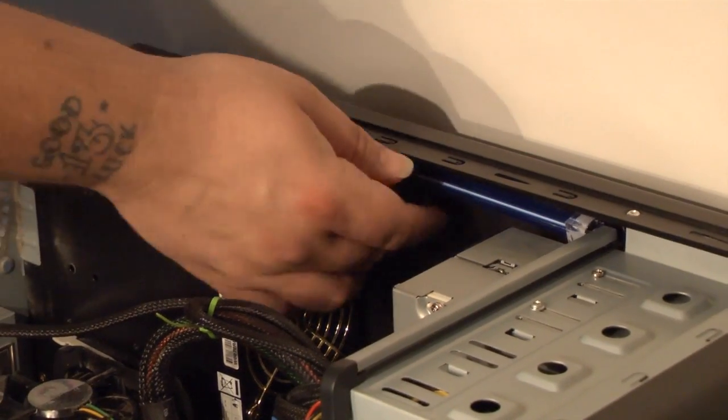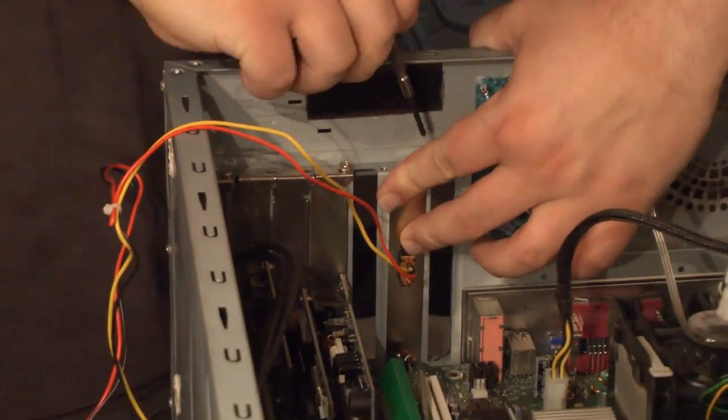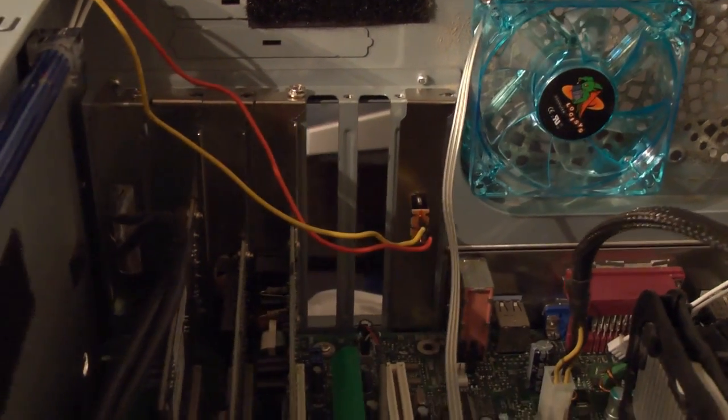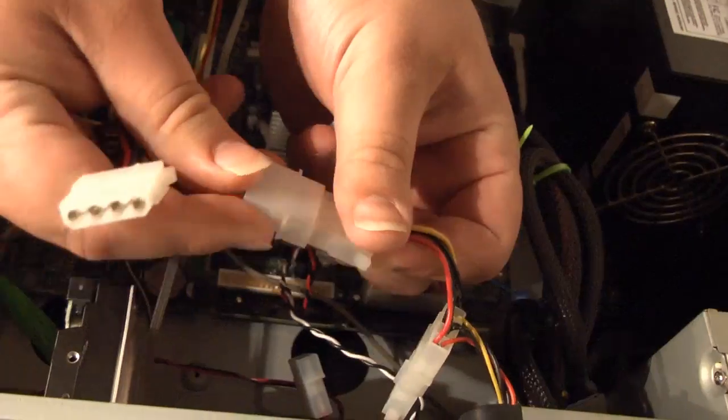In order to use the cathodes, you'll also need to install the included module and on-off switch. To install the switch, simply use one of the open PCI slots on the back of your case. Carefully line it up, mount it to the case, and attach it to the power supply.